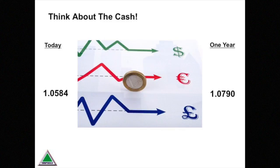Now, take a look at the spot and forward FX rates. At the start of the year, one euro gets you 1.0584, and in a year's time it gets you more — it gets you 1.0790. So the euro has strengthened by the interest differential, in this case about 2%.